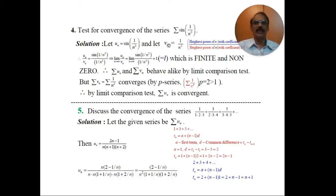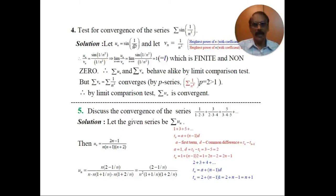In the numerator, since sine of 1 by n squared is a trigonometric ratio, we should not consider the trigonometric part — sine, cos, tan, secant — we leave it. We consider only the angle. Therefore, in the numerator we have 1, and in the denominator we have n squared. Hence, vn is 1 by n squared.